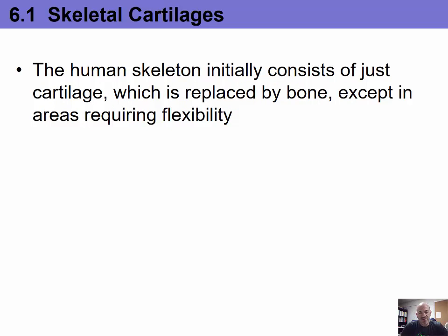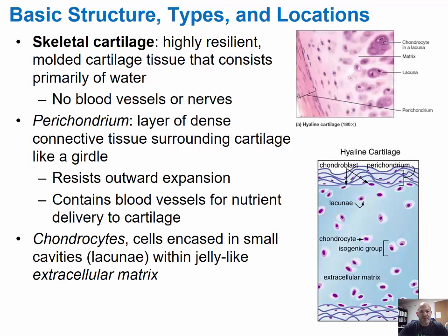We're going to start with skeletal cartilages. The human skeleton initially consists of just cartilage, which is replaced by bone except in areas requiring flexibility. Skeletal cartilage is highly resilient molded cartilage tissue that consists primarily of water. There are no blood vessels or nerves. There is a structure called the perichondrium, which is a layer of dense connective tissue surrounding the cartilage like a girdle. Its function is to resist outward expansion when the cartilage is compressed, and the perichondrium does contain blood vessels for nutrient delivery to the cartilage.